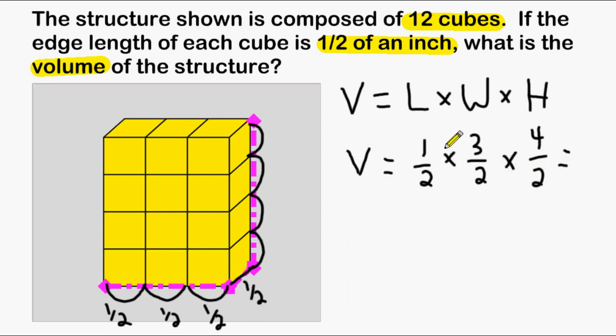For the numerator, we can multiply one times three, which is three, and three times four, which is twelve. For the denominators, we have two times two, which is four, and four times two, which is eight.